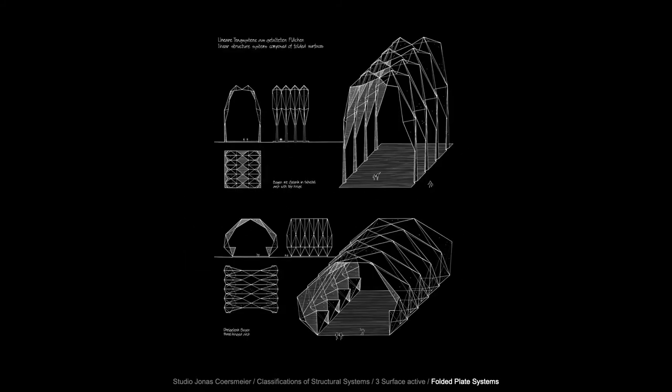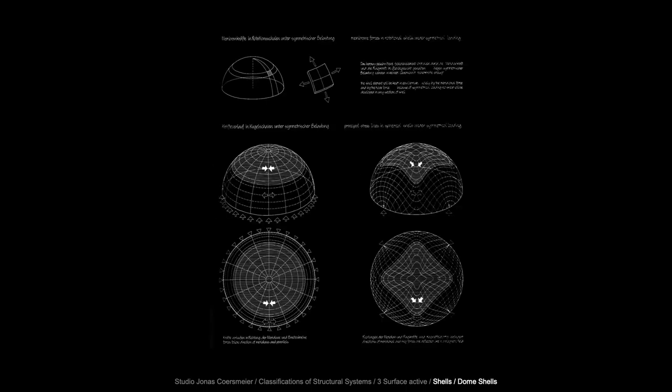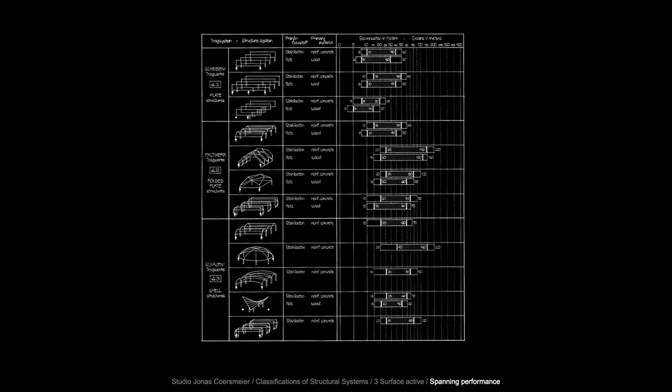Moving to the spanning performance of surface active systems: they range from 40 meters or 120 feet for a regular plate, to 150 meters or 450 feet for folded plate structures like those we saw in the previous example. Finally, I want to move to the form active systems — those are probably most relevant for the studies that my section does and the experiments they perform in our studio. These are structure systems of flexible non-rigid matter in which the redirection of forces is affected through particular form design and characteristic form stabilization. The basic components are subjected to one kind of normal stress — either compression or tension.